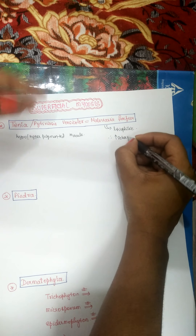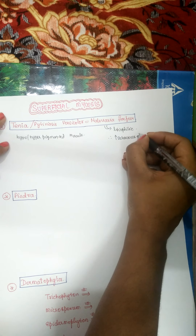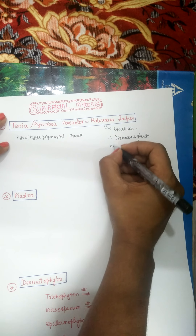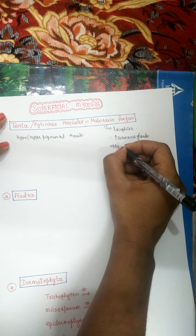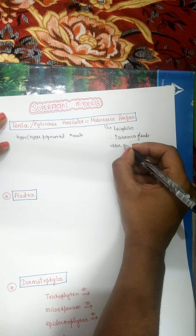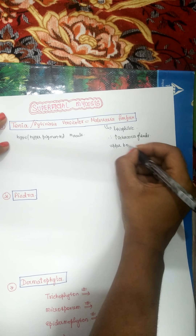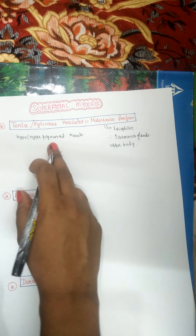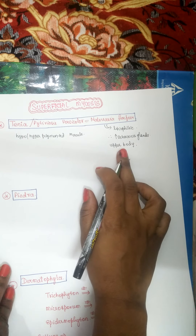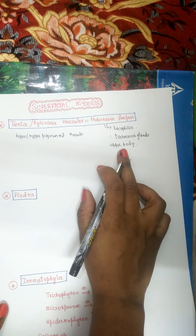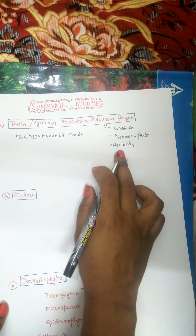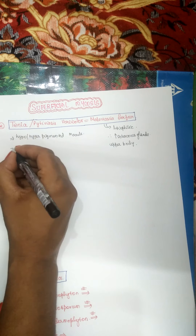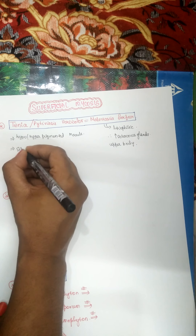Because it is lipophilic, it is more commonly seen in areas with more sebaceous glands, which are present in the upper part of the body. So Malassezia furfur causing hypo and hyper-pigmented macules is usually found in the upper part of the body. It also causes seborrheic dermatitis.